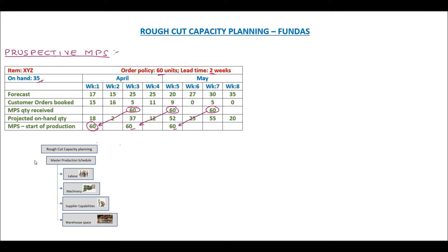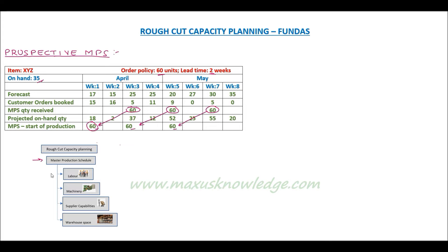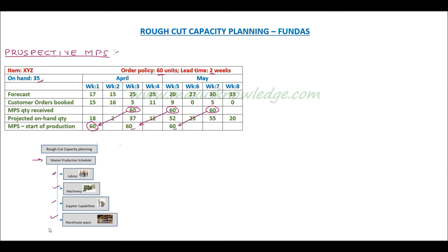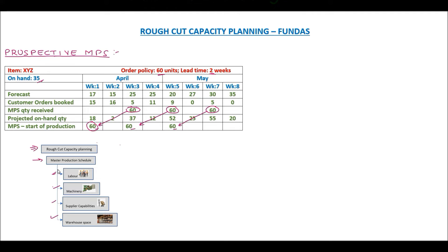After developing a prospective MPS, we need to check if the MPS is feasible in terms of available resources like labor, machinery, supplier capabilities, and warehouse space. This process is known as rough cut capacity planning, and it gives only a rough approximation of the actual resource requirements.